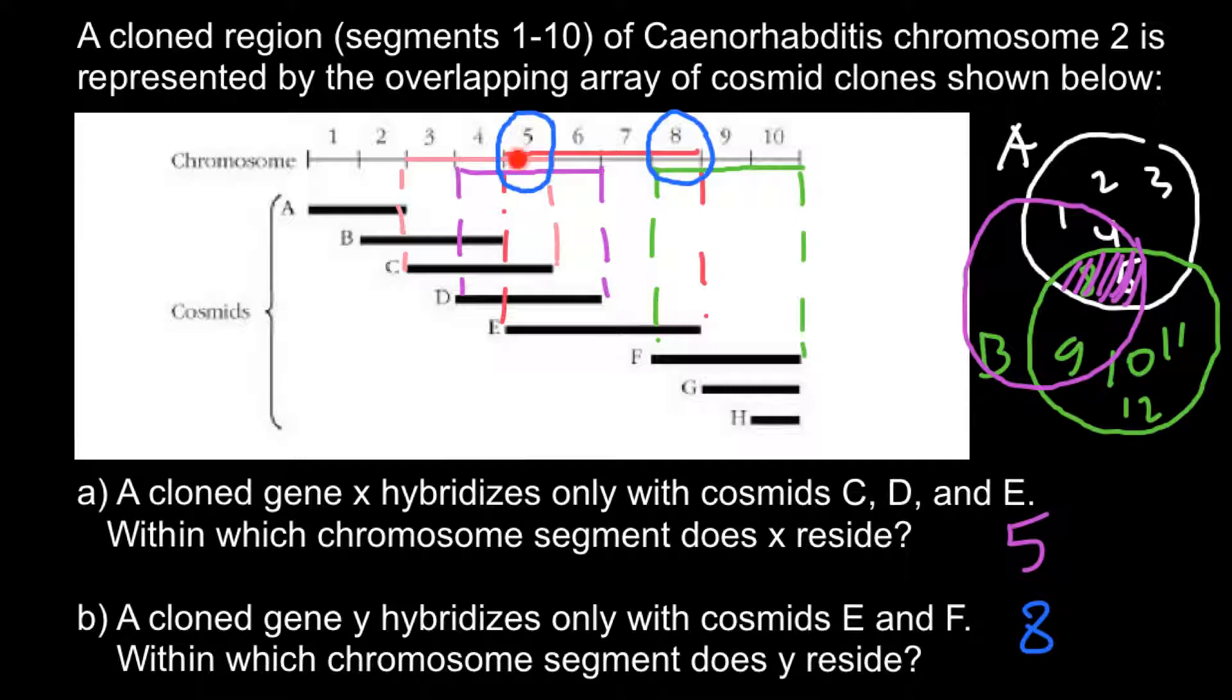So in this problem, we are looking for overlapping of all three cosmids.